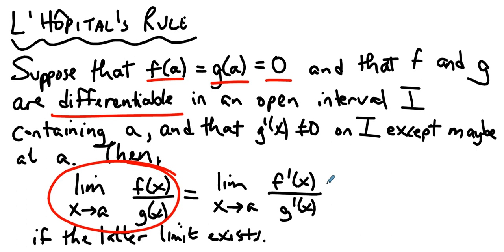L'Hopital's rule says try this instead. Take the derivative of f, the derivative of g, evaluate there. We can do that because g prime is not zero on the interval except maybe at a, so the limit, this won't be awful, and then if that blue limit exists, it's the same as the red one.